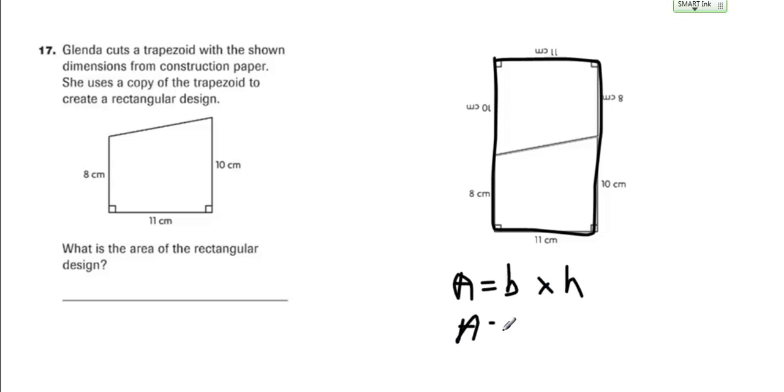So the base is 11, but we have to infer how tall this thing is. So we know it's 10 from here to here, and we know it's 8 from here to here, so we have to add these two to get how tall it is. 10 plus 8 would be 18.